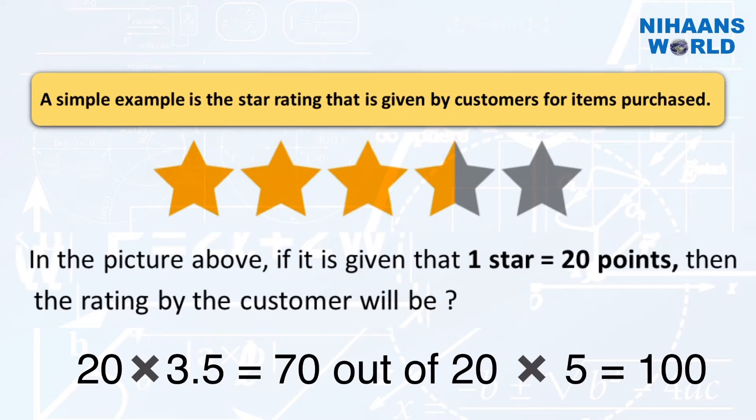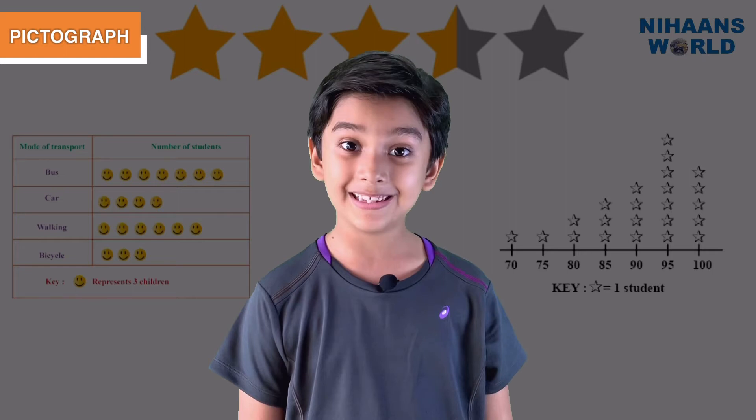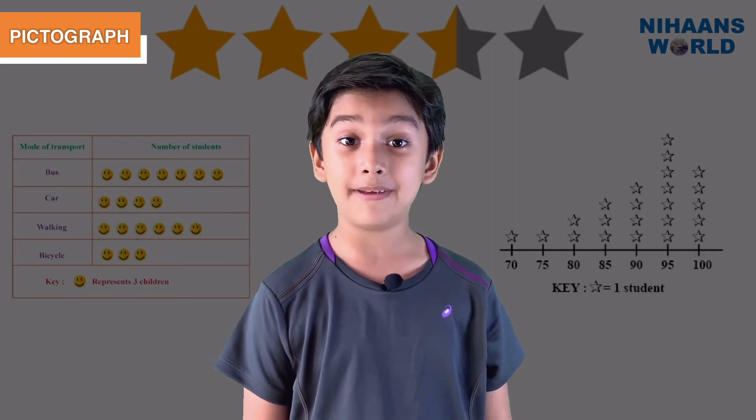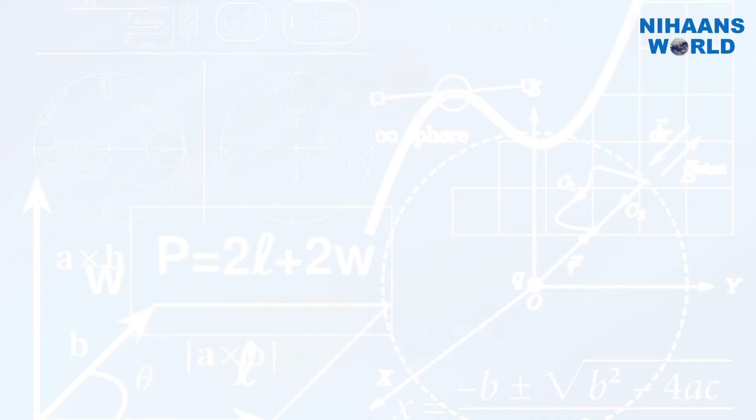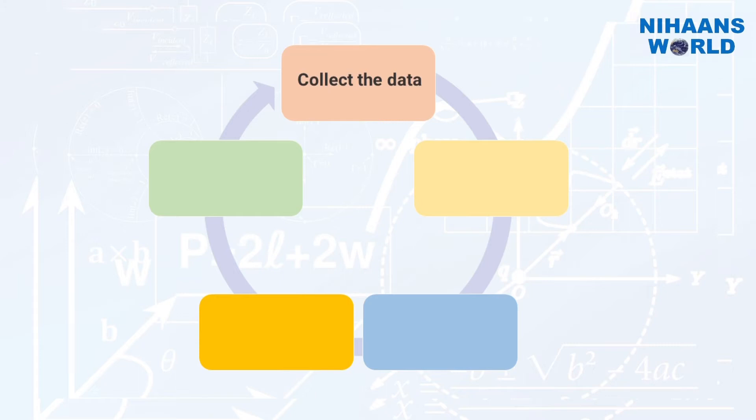Let's learn different steps in making a pictograph. Collect the data—first step is obviously collecting the data of the category you want to represent. Select the image or symbol.